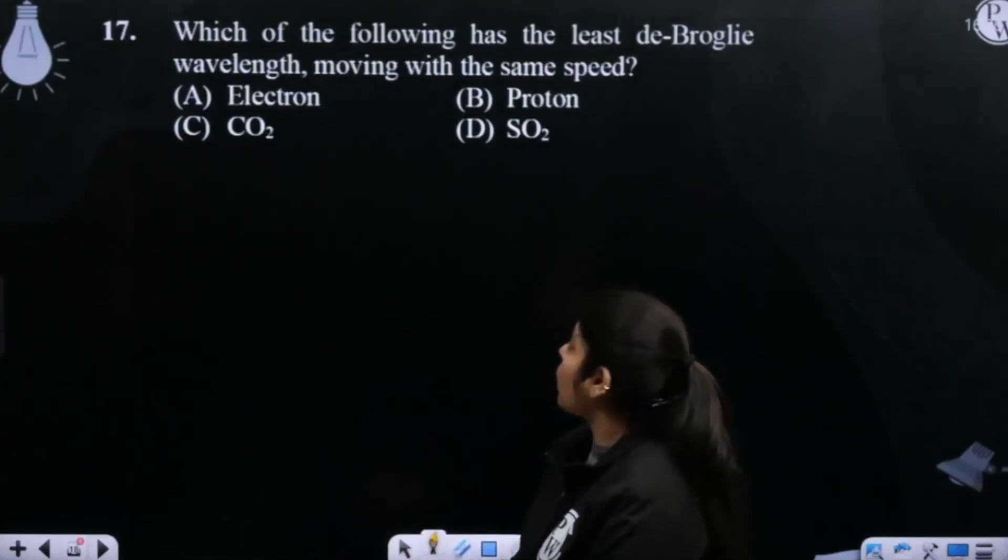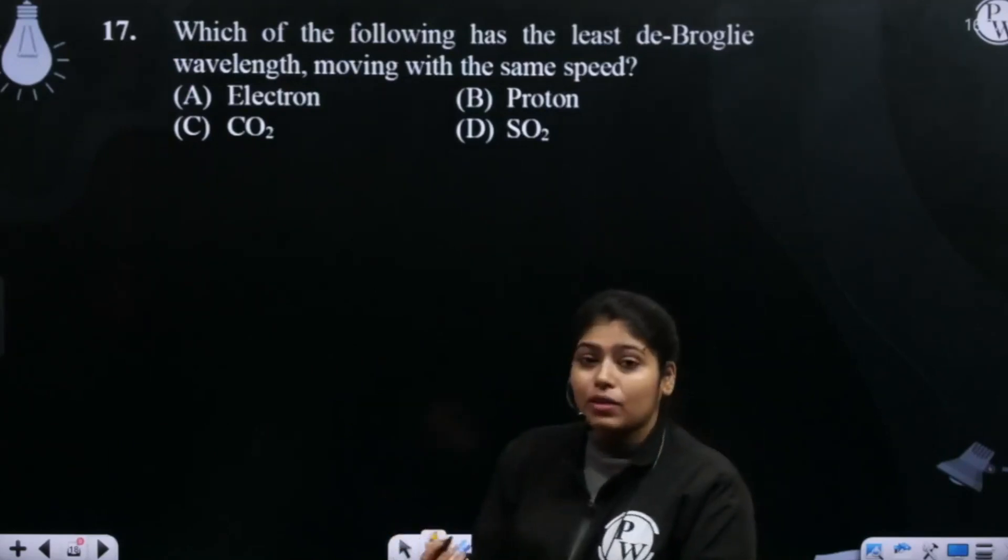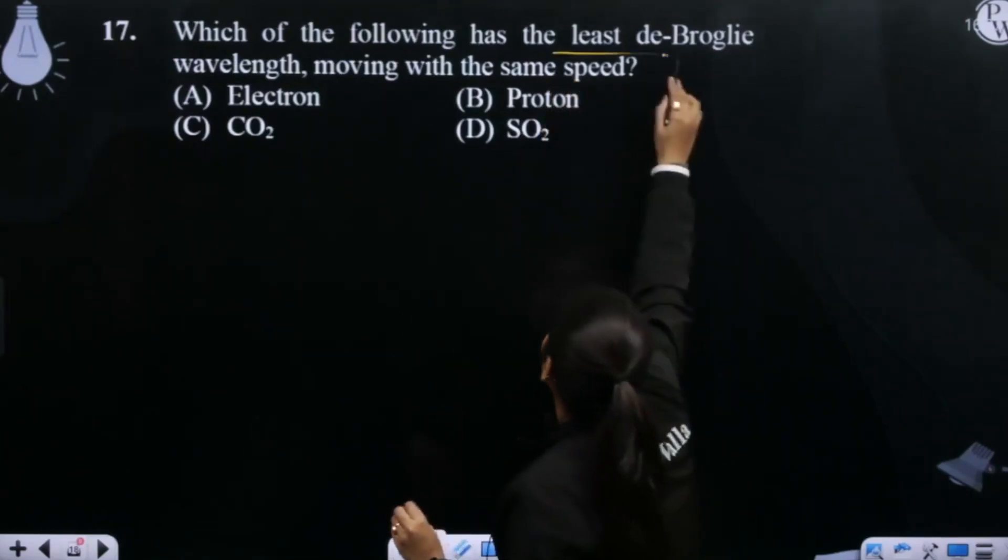Which of the following has the least de Broglie wavelength moving with the same speed? We have to calculate de Broglie wavelength. It is also the least de Broglie wavelength.